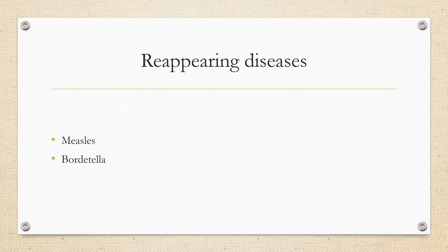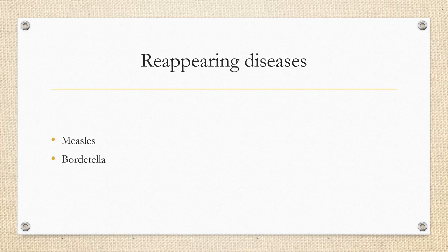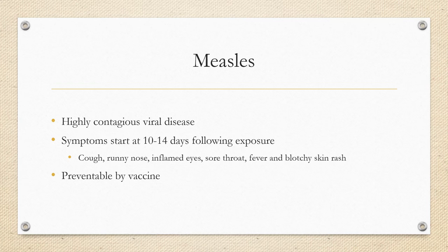Reappearing diseases include measles and Bordetella. Measles was considered eliminated in the US in 2000, but remains common worldwide with 20 million cases and 140,000 deaths yearly. One in 1,000 develop meningitis and die from measles. It is transmitted through airborne droplets and is highly contagious, with symptom onset 10 to 14 days after exposure. It is preventable by the MMR vaccine — measles, mumps, and rubella.